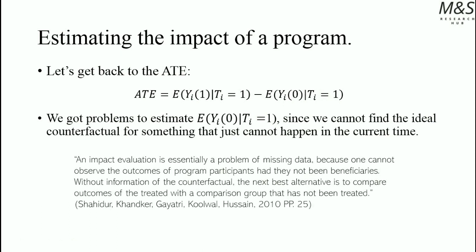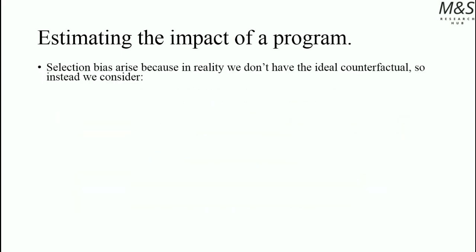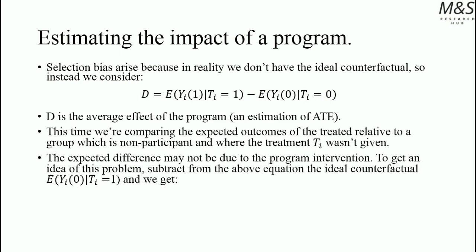Citing the Handbook of Impact Evaluation published by the World Bank, we can define a problem here: an impact evaluation is essentially a problem of missing data, because one cannot observe the outcomes of program participants had they not been beneficiaries. Without the information of the counterfactual, the next best alternative is to compare outcomes of the treated with a comparison group that has not been treated. Selection bias arises because in reality we don't have the ideal counterfactual, so instead we need to consider an approximation.